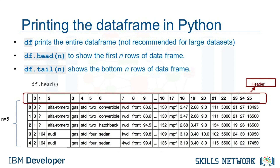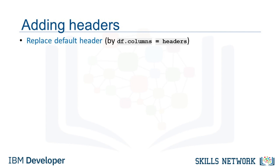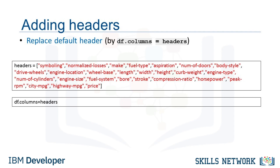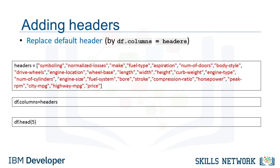It is difficult to work with the data frame without having meaningful column names. However, we can assign column names in pandas. In our present case, it turned out that we have the column names in a separate file online. We first put the column names in a list called headers. Then we set df.columns equals headers to replace the default integer headers by the list. If we use the head method to check the dataset, we see the correct headers inserted at the top of each column.